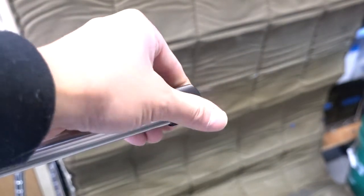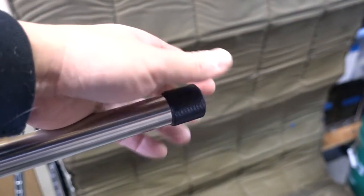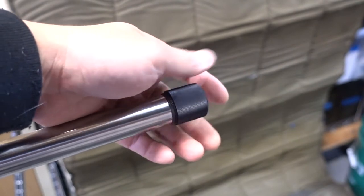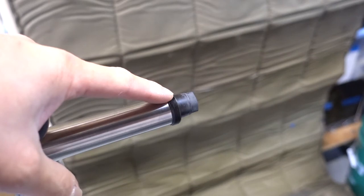So, here's the muzzle device I'm running on this Criterion Remmage build. It's the Hellfire system from Area 419.